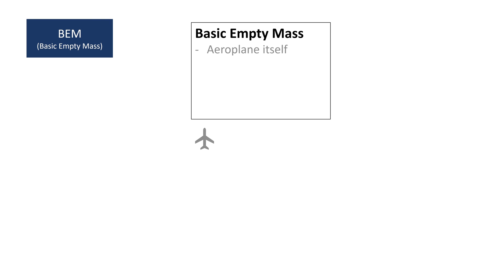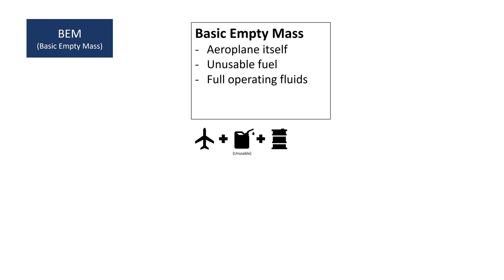Let's start off with the basic empty mass. It is the aeroplane itself plus, among others, all the unusable fuel and fluids like hydraulics, the lubricating oil in the engines and auxiliary units, and emergency equipment like fire extinguishers, pyrotechnics and oxygen systems.